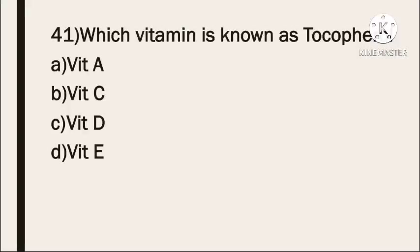Next question: which vitamin is known as Tocopherol? Option A: Vitamin A. Option B: Vitamin C. Option C: Vitamin D. Option D: Vitamin E. The correct answer is Vitamin E — it is known as Tocopherol.